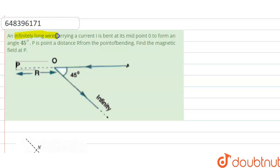An infinitely long wire carrying current i is bent at its midpoint O to form an angle 45 degree. P is a point at a distance r from the point of bending. Find the magnetic field at P.